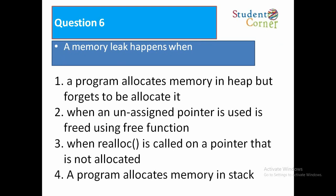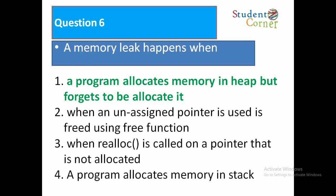Question number 6: A memory leak happens when? Option 1, a program allocates memory in heap but forgets to be allocated. Option 2, when an unassigned pointer is used, is freed using free function. Option 3, when reallocate is called on a pointer that is not allocated. Fourth option, a program allocates memory in stack. The answer is a program allocates memory in heap but forgets to be allocated.